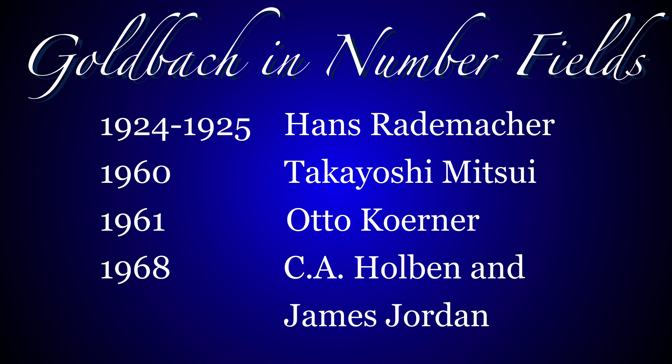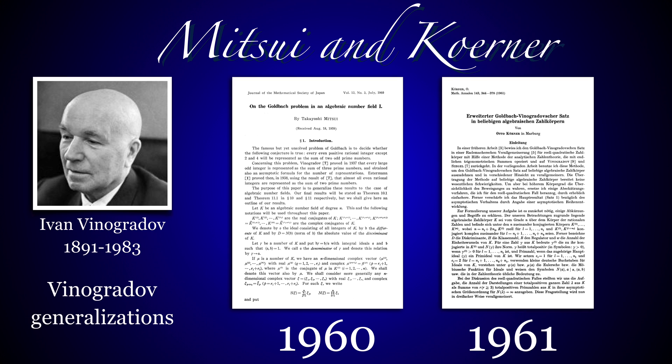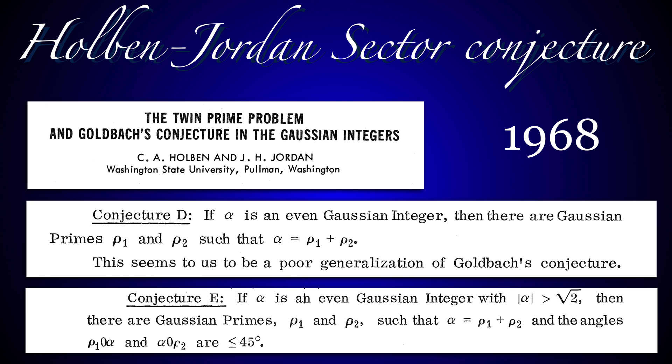It's not the first conjecture on Goldbach in number fields. Hans Rademacher already worked on that in the 20s, and in the 60s there was work with Mitsui, Koerner, Holben, and Jordan. But nobody seems to have covered the conjecture we just formulated. Rademacher's work is quite impressive. He sends Vinogradov type results, 20, 24, 25. Mitsui and Koerner pushed this further in the 60s. Holben and Jordan have a precise sector conjecture which deals with whether every even Gaussian integer can be written as a sum of two Gaussian primes in some 45-degree sector. They also have a weak conjecture which we'll formulate again later.